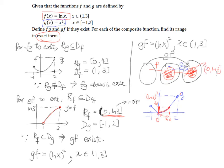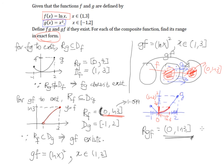So the range of gf will be from 0 to (ln 3) squared, inclusive of 0 and exclusive of the upper end. This is the answer we are really interested in, and we can't really get this from the graphic calculator unless you know what (ln 3) squared is in decimal, which is unlikely. So this tracing method is the only way to get the exact form.